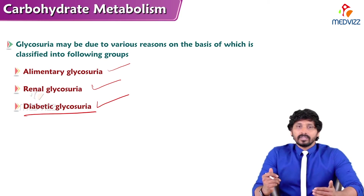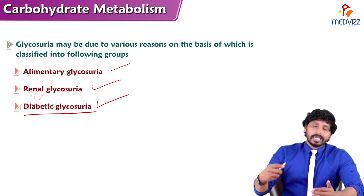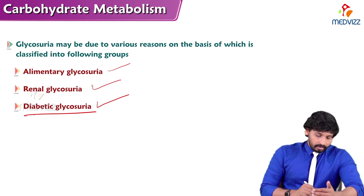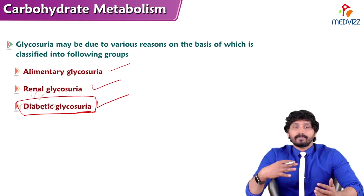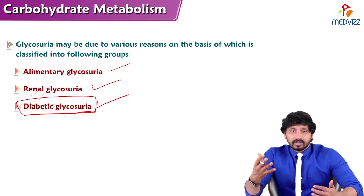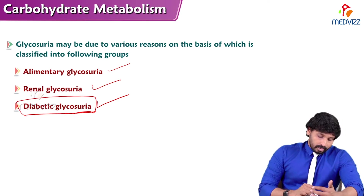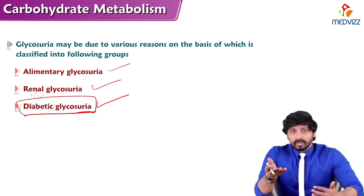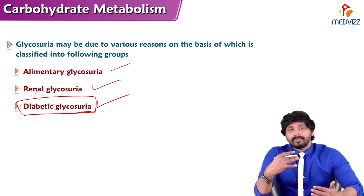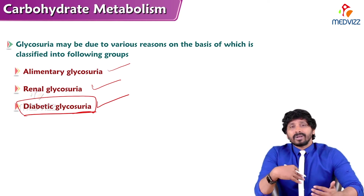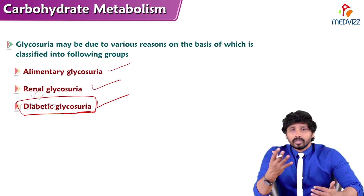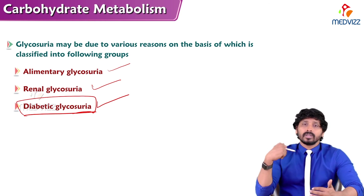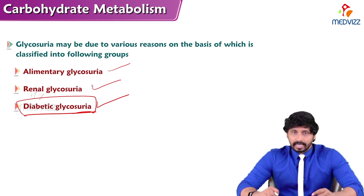These are the three types of glycosuria. We will also see diabetic glycosuria in the context of type 1 and type 2 diabetes. Gestational diabetes — which occurs during pregnancy — will be studied separately under the topic of diabetes mellitus. Thanks for watching.